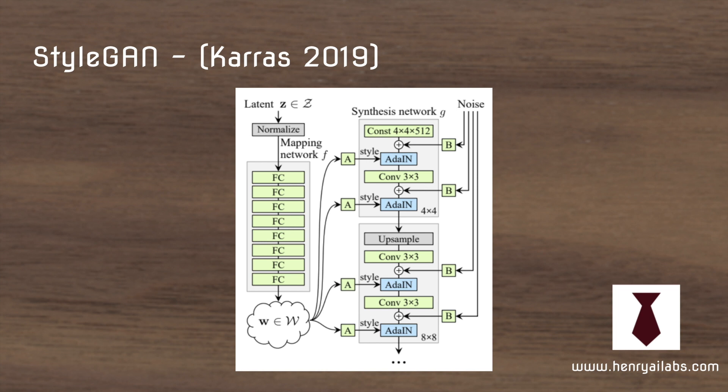Another paper regarded as state-of-the-art is StyleGAN. StyleGAN uses the same progressive growing model but switches from mapping the latent code directly, instead starting from a constant learned value. The way they use the latent code is borrowed from style transfer literature, using adaptive instance normalization to control the style of generated images, with really amazing results in latent space interpolation.